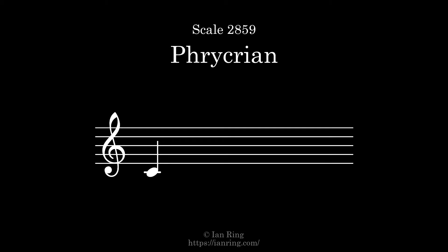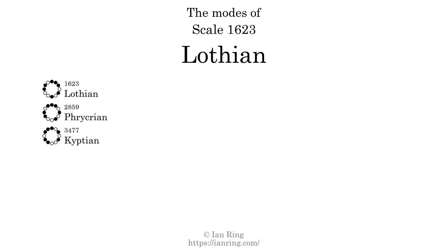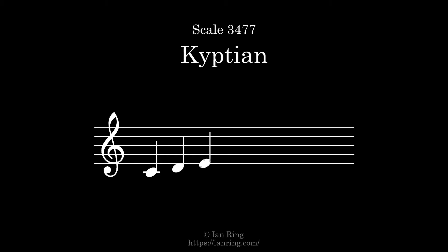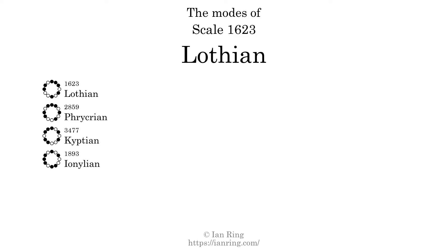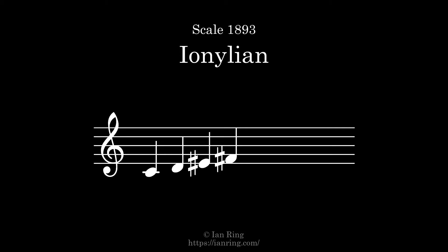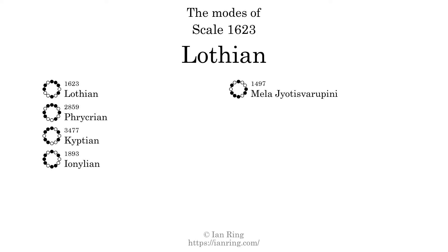It sounds like this. The third mode is scale 3477, also known as Phrykrian. It sounds like this. The fourth mode is scale 1893, also known as Ionillion. It sounds like this. The fifth mode is scale 6497, also known as Melegetus Verupini. It sounds like this.